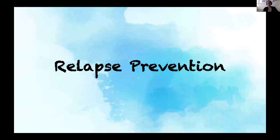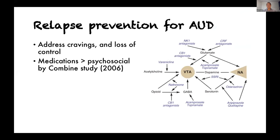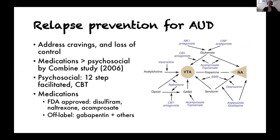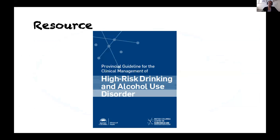On the last topic — relapse prevention — medications are better than psychosocial interventions alone. There are FDA-approved medications available. Naltrexone is probably the safest from the ED perspective — it's an opioid antagonist with a number needed to treat of nine. The main things to consider are that it's relatively contraindicated with hepatic dysfunction, and make sure patients are not on opioids, because you'll precipitate withdrawal if you start them on naltrexone. A good resource to look at is the BCCSU guidelines.